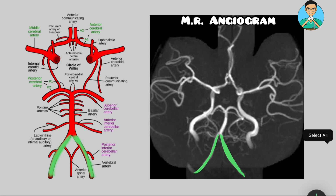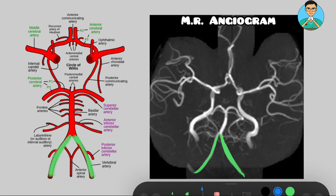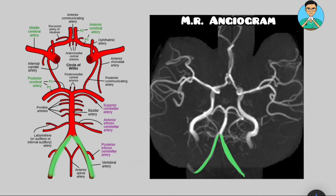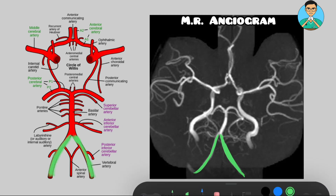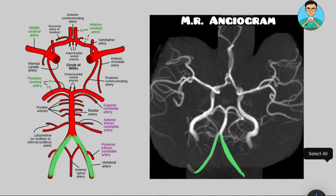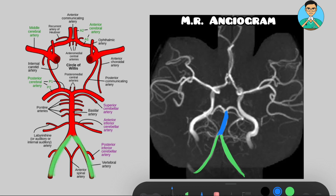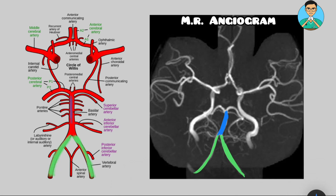These two vertebral arteries join together and form something known as the basilar artery. This is the basilar artery, and on the schematic diagram, this shows the basilar artery.